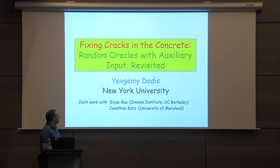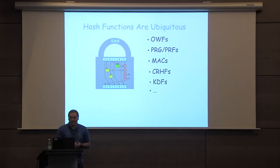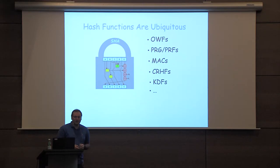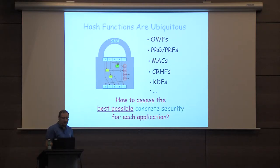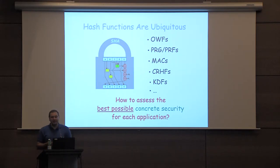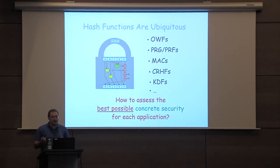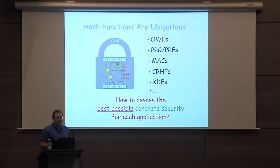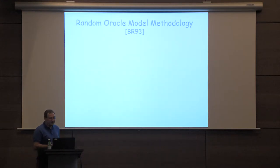So I'll have to explain the title. The paper is about security of applications using hash functions. As you know, hash functions are used all over the place in many important applications. In particular, what we are going to ask is how to assess the best possible concrete security for each application so that we can correctly set security parameters. Luckily, we have a beautiful framework to answer this question, which is the random oracle methodology.